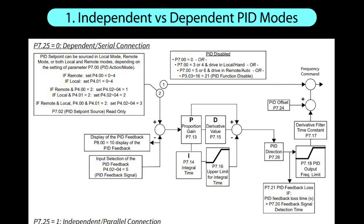In the dependent mode, the error is multiplied by P and that is passed to I and D, which means every time you adjust P, you have to go back and adjust I and D. So I and D are dependent on P. This is how the old analog systems worked, where P was essentially the system gain, so every time you adjusted the system gain, it changed how I and D worked.